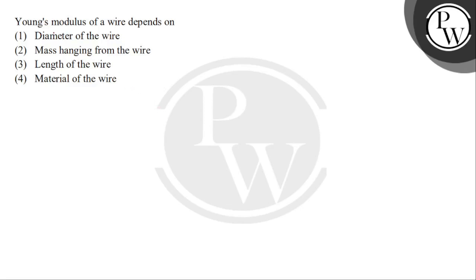Let's read the question: Young's modulus of a wire depends on — options given are: first, diameter of the wire; second, mass hanging from the wire; third, length of the wire; and fourth, material of the wire.